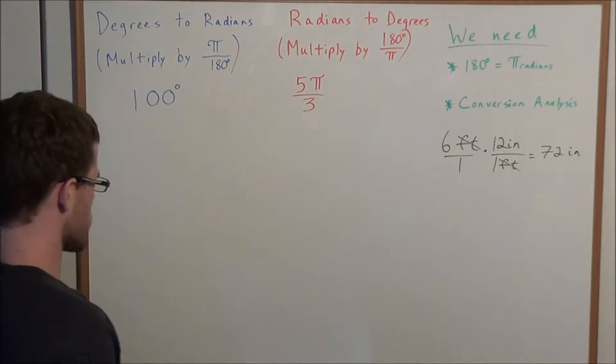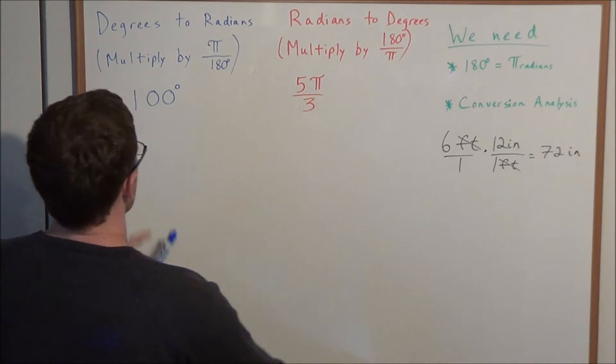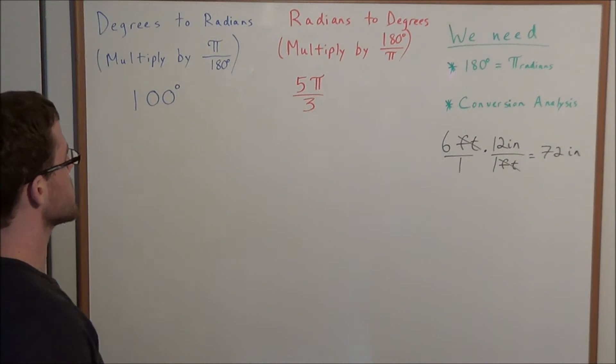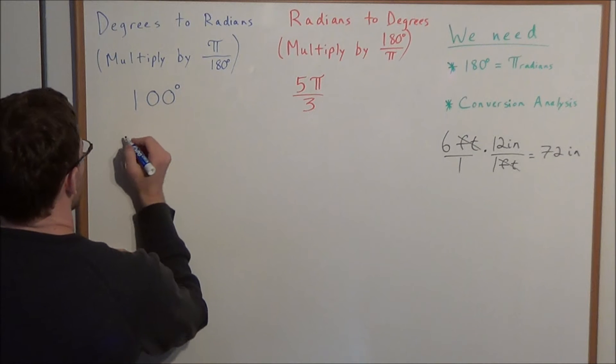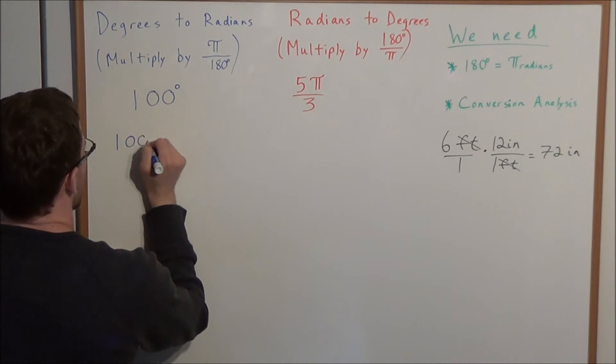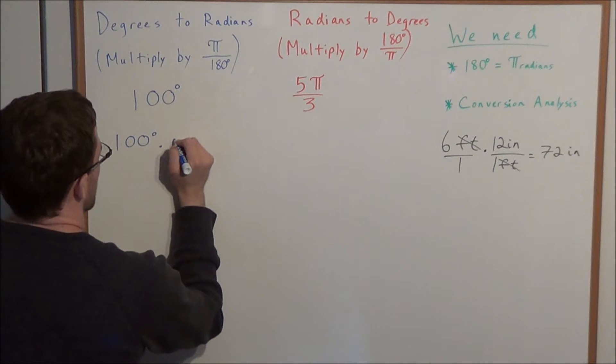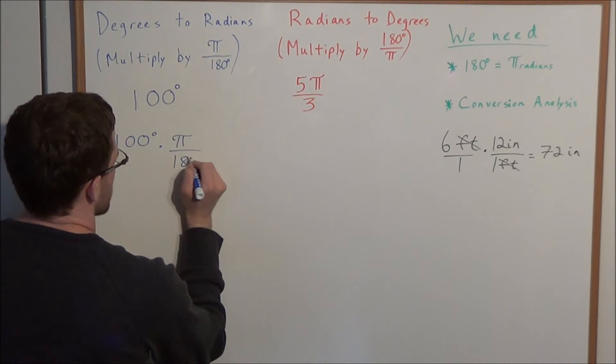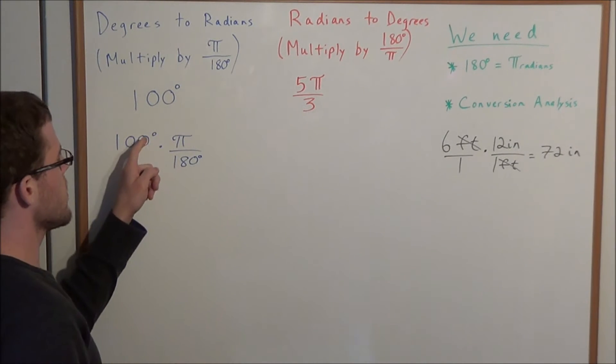So let's start with degrees to radians. We're looking at 100 degrees and we want to convert to radians. Notice how we have 100 degrees, and we want to multiply by π radians divided by 180 degrees.